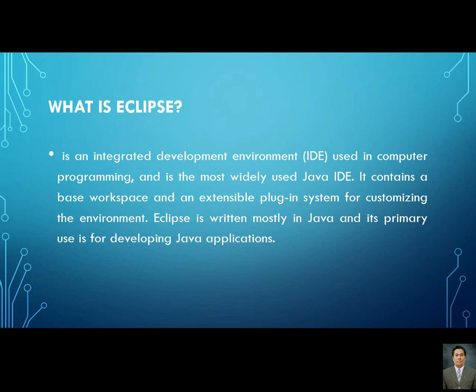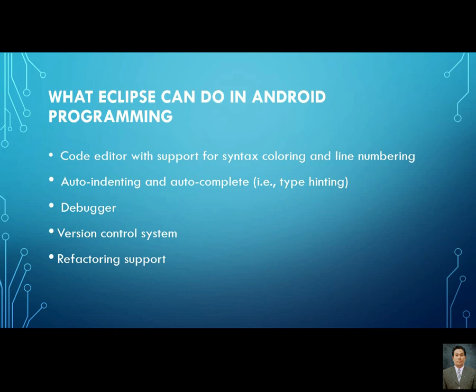What can Eclipse do in Android programming? Eclipse has a code editor with support for syntax coloring and line numbering. It can edit Android programs and supports syntax coloring and line numbering. It also has auto editing and auto complete, or type hinting — that's the feature that suggests reserved keywords while you're programming.